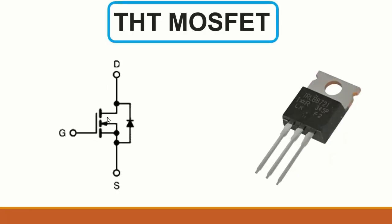Next we have a THT MOSFET. Transistors and MOSFETs are similar but slightly different. The MOSFET has drain, gate, and source — the gate is like the base for a transistor. Inside the MOSFET there is a diode, so to test it, set the multimeter to diode mode and check between source and drain. A reading of about 700mV drop voltage means the MOSFET is good; a buzzer or very low drop voltage means it is damaged.